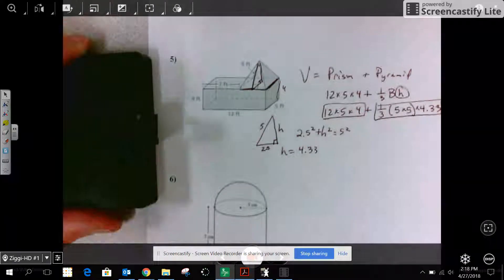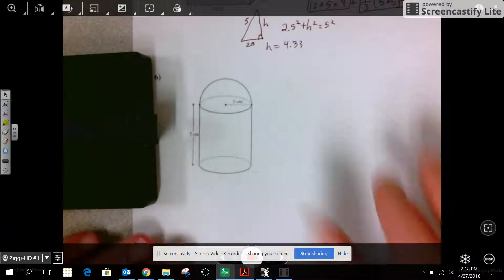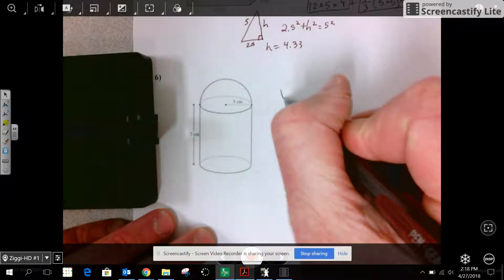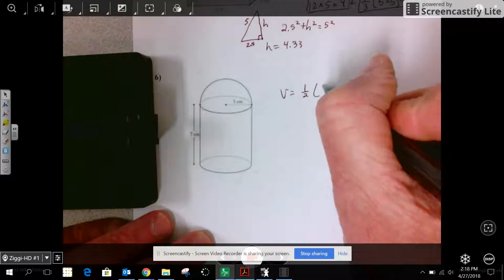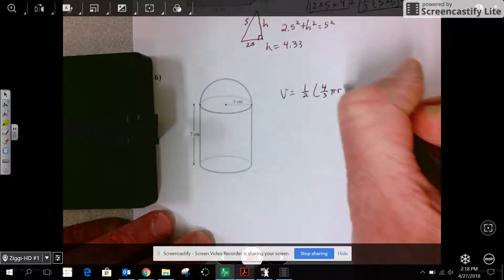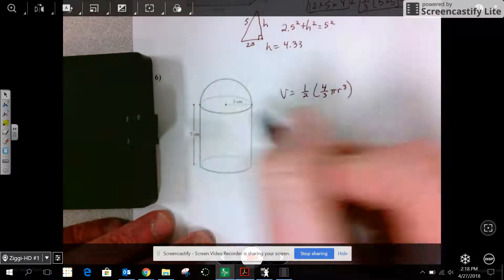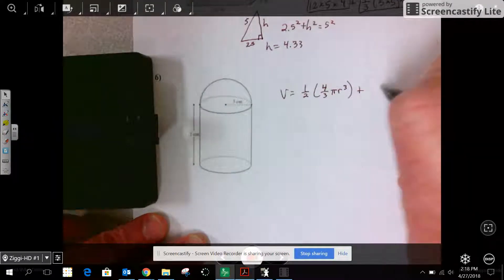Last one. I have a hemisphere, which is half of a sphere. And I have a cylinder.